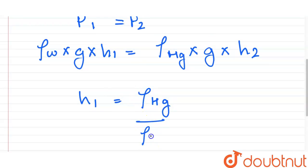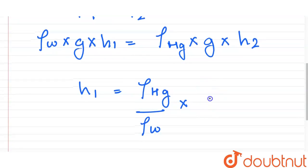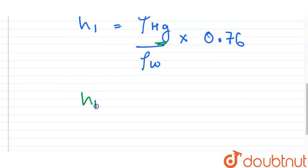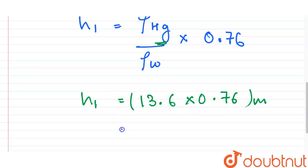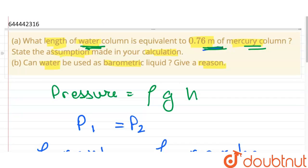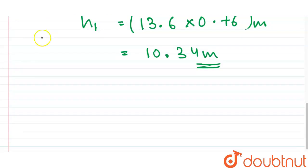From this equation, h1 (height of water column) = (density of mercury / density of water) × 0.76. Assuming the relative density of mercury is 13.6, h1 = 13.6 × 0.76 = 10.34 meters. This is the height of water column equivalent to 0.76 meters of mercury column. The assumption made in this calculation is stated next.